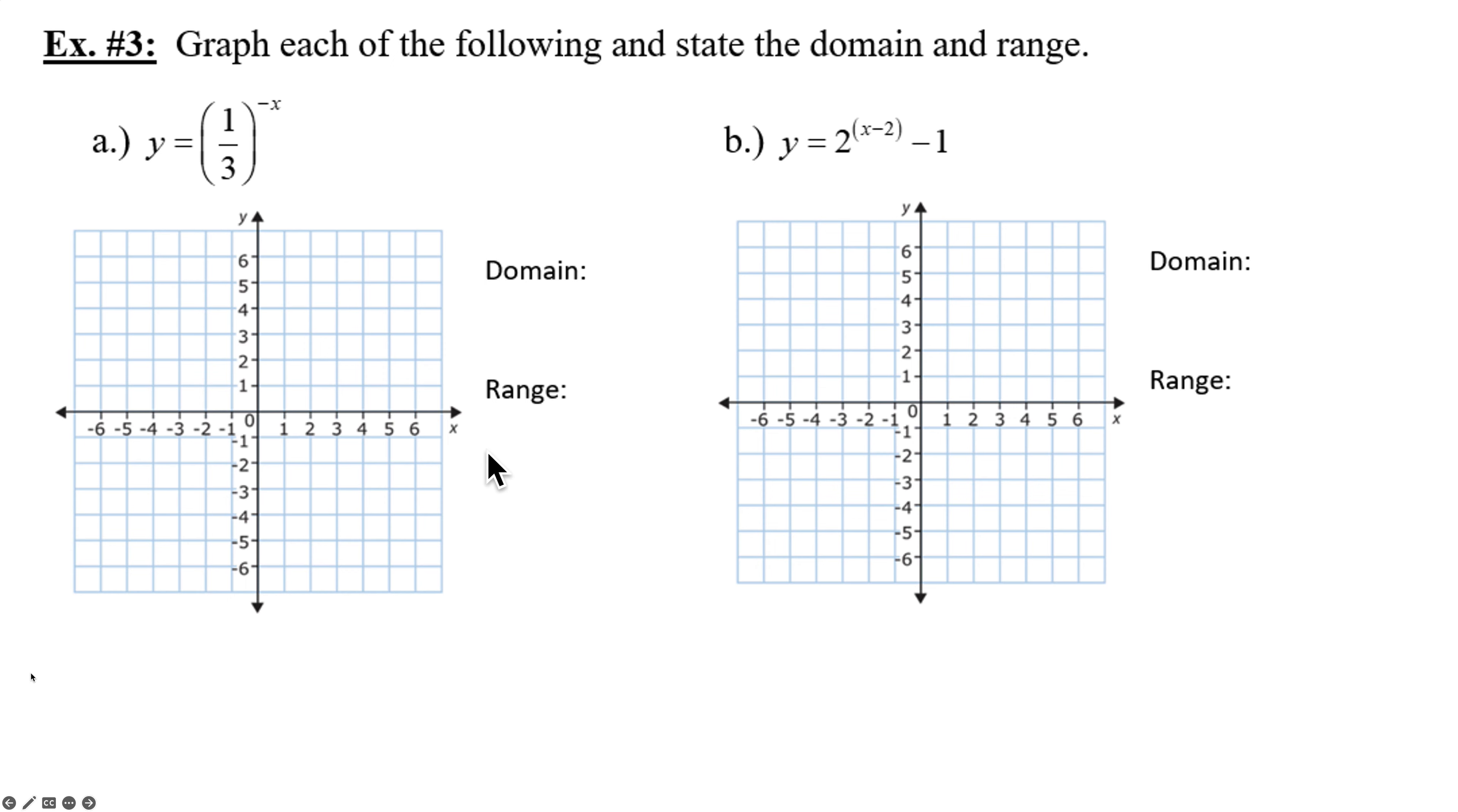So let's take a look at some graphs here. If we had one third raised to the negative x, I would identify that we're definitely going to have a flip over the y-axis. So I'm going to plot my three basic points we talked about. Negative one, one over a, zero one, and one a. Well, since here's a, we'll be plotting a point at one and one third, zero one, and then one over one third turns that into negative one three. I put in my horizontal asymptote and now we flip it over the y-axis. So these points flip over the y, the zero one doesn't change. We flip it and we have our graph.